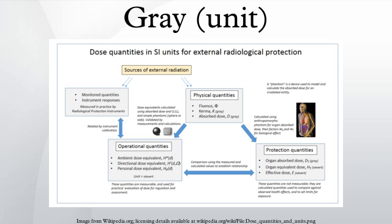The gray is conventionally used to express the severity of what are known as tissue effects from doses received in acute unintended exposure to high levels of ionizing radiation. These are effects which are certain to happen, as opposed to the stochastic effects due to low levels of radiation which have a probability of happening. A whole-body acute exposure to five or more gray of high-energy radiation usually leads to death within fourteen days. This dosage represents 375 joules for a 75 kg adult.